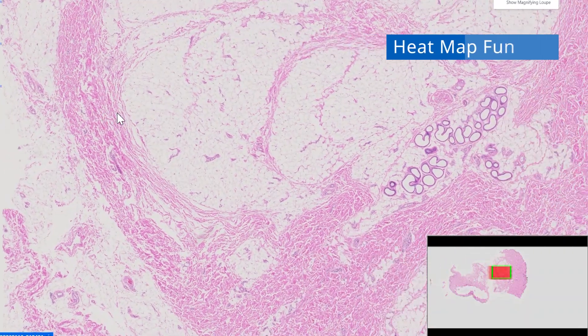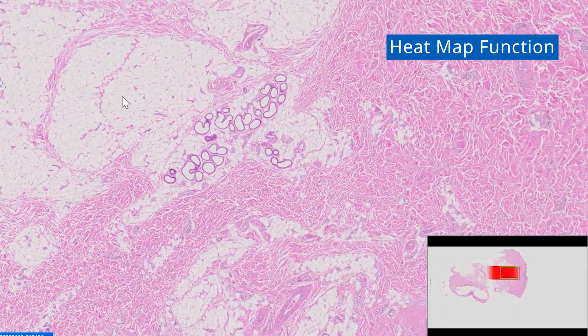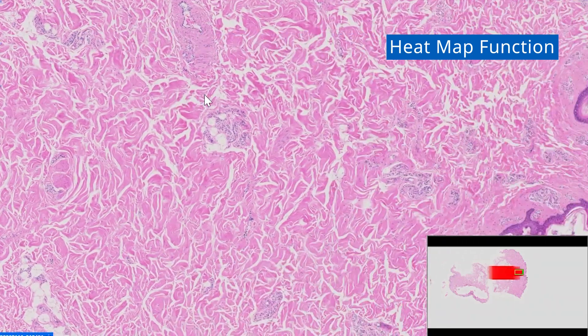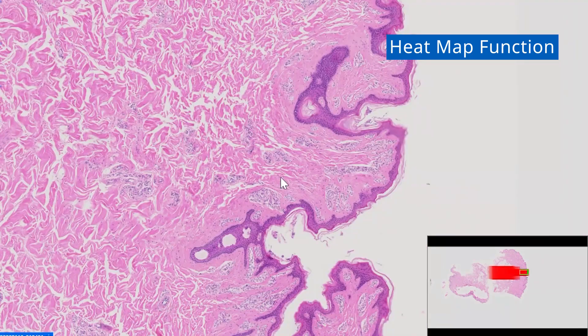You can quickly check which part of the slide you're observing using the heat map window. The system automatically records visited areas for current and future reference.